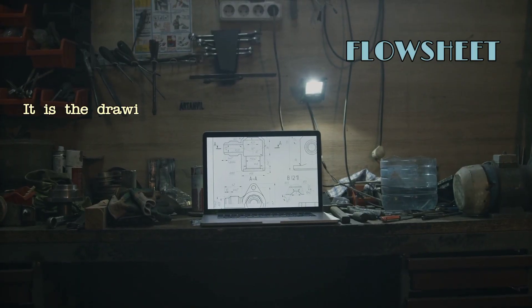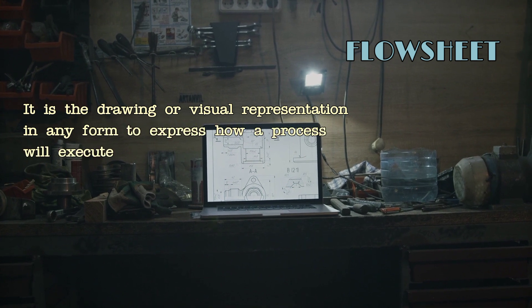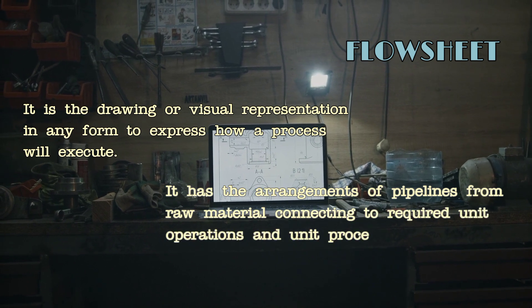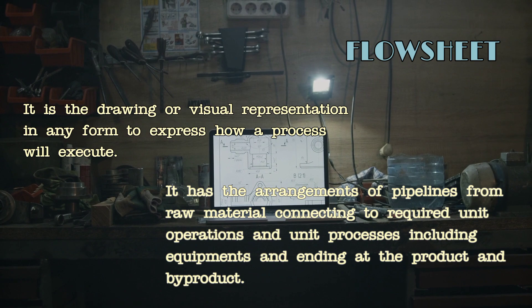The flowsheet is the drawing or visual representation in any form to express how a process will execute. It has the arrangements of pipelines from raw material connecting to required unit operations in unit processes including equipment and ending at the product and byproduct.